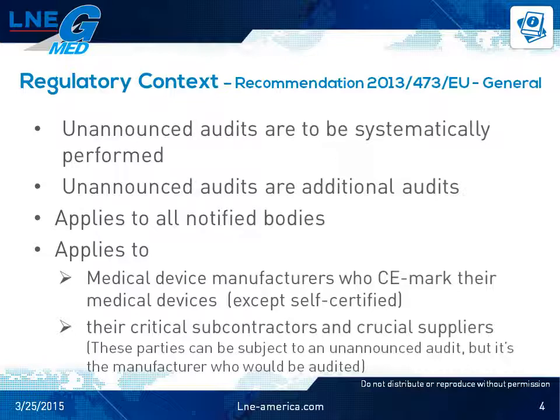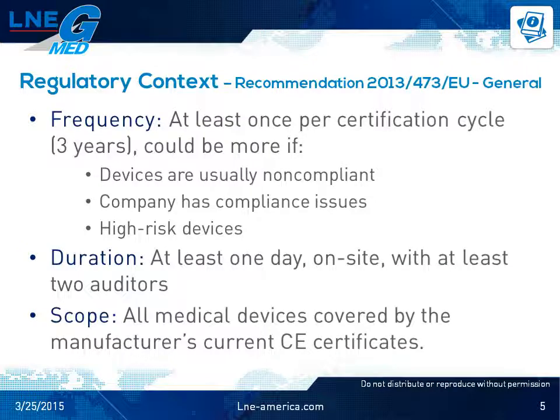In addition to manufacturers, their critical subcontractors and crucial suppliers can be subject to an unannounced audit. Unannounced audits are performed at least once per certification cycle. This frequency can be increased if one or more devices are found non-compliant, if the company has compliance issues, or if the company manufactures high-risk devices such as class 3 or list A devices. The duration is at least one day on site with a minimum of two auditors, adjusted based on the company size, activities, and number of devices.